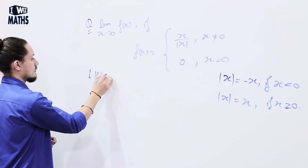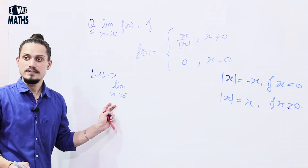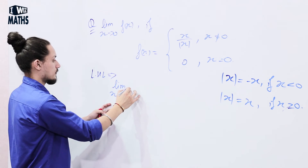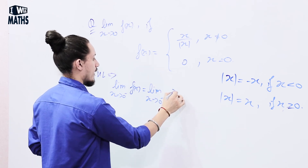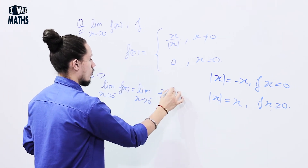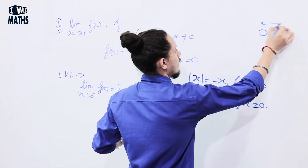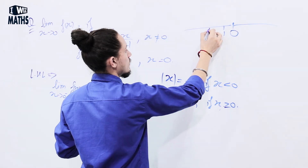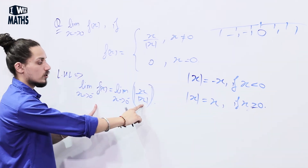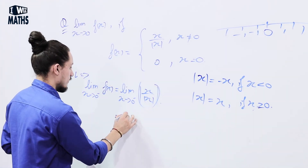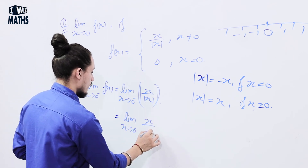Left hand limit: lim (x → 0⁻) f(x) = lim (x → 0⁻) x / |x|. Since we're approaching from the left hand side of 0, all values are negative, so |x| = -x. We get lim (x → 0) of x / (-x) = lim of -1 = -1.